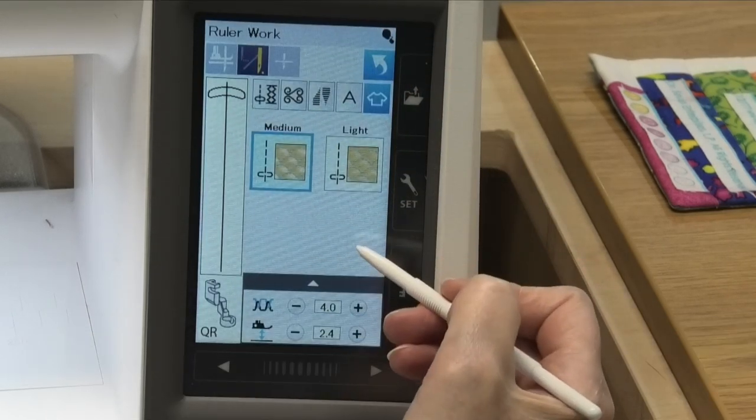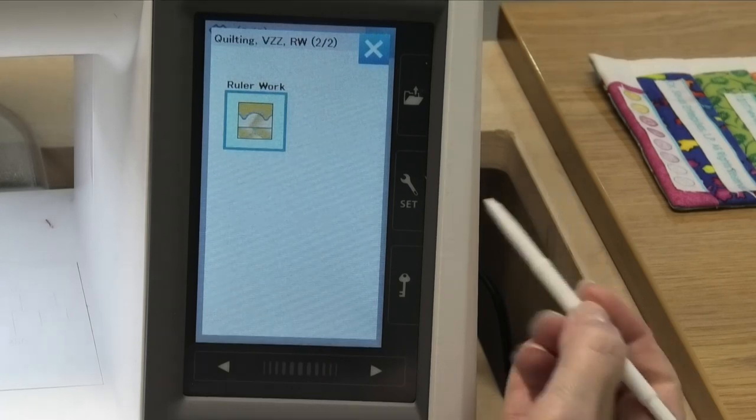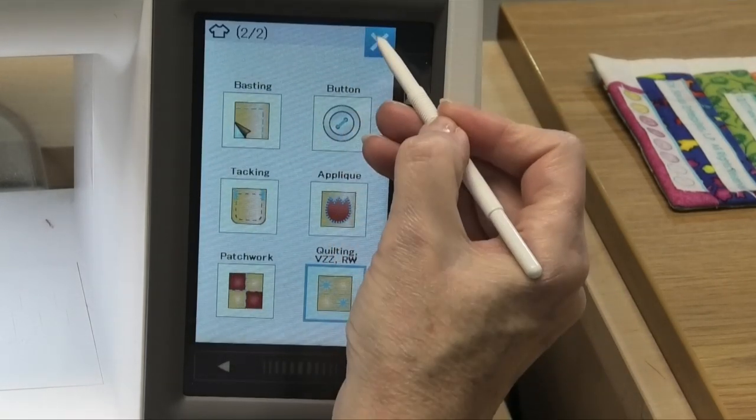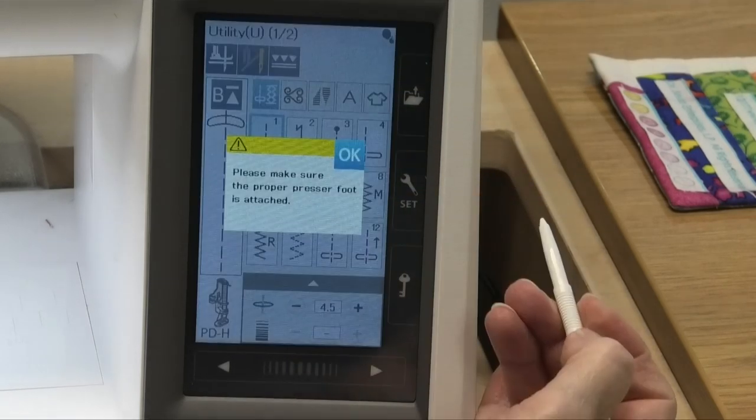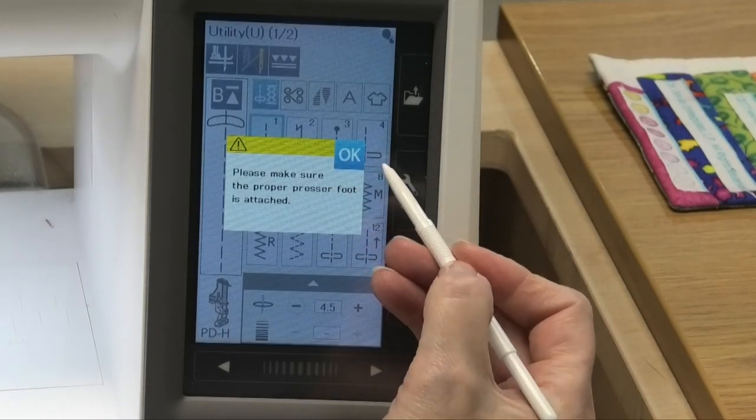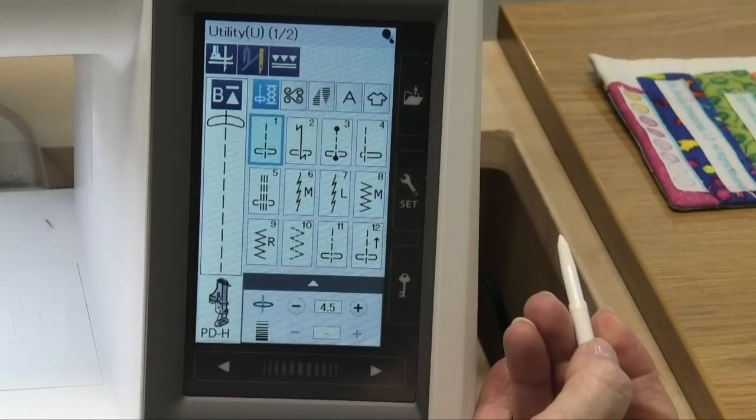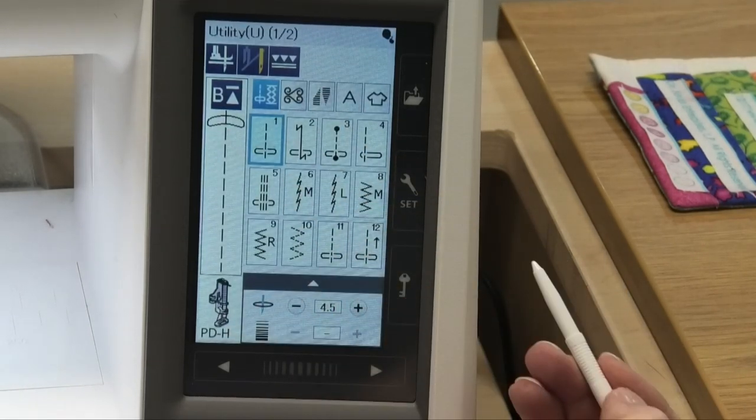Alright so that's your ruler work. Again if you want to go back to the menu and toggle between those previous screens you can do that. Or you can just close that off totally and go back here. Now it's going to tell you to make sure the proper presser foot is attached because we're coming out of that menu and going into something else. So you may not want to use your PDH foot.